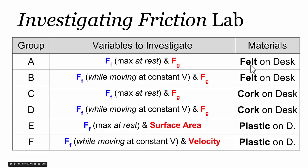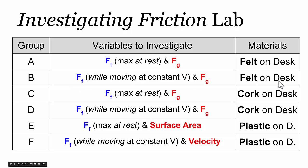Group A did that specifically for felt material on the bottom of the friction sled and the desk. Group B used the same materials but looked at the size of the frictional force that existed between the felt surface and the desk while it was moving — specifically at a constant velocity — and found out how changing the object's weight affected that.